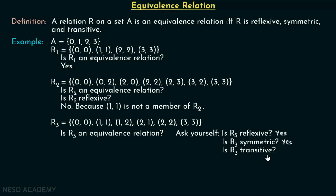Is R3 transitive? For (1,2) and (2,1), we obviously have (1,1). For (2,1) and (1,2), we have (2,2) in this relation. Obviously this relation is transitive as well. Therefore, R3 is an equivalence relation — it is reflexive, symmetric, and transitive.